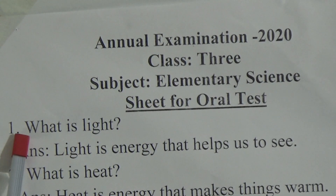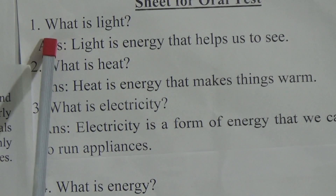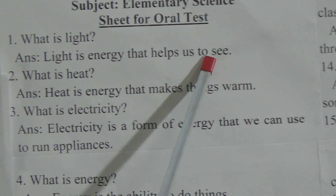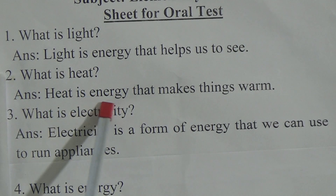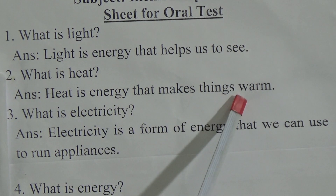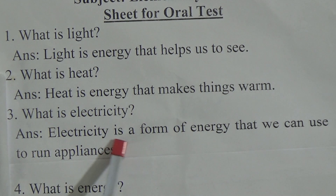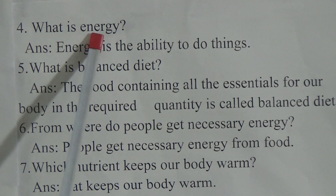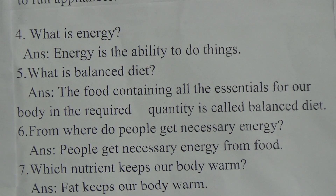Now we will discuss the oral sheet. Question 1: What is light? Answer: Light is energy that helps us to see. Question 2: What is heat? Answer: Heat is energy that makes things work. Question 3: What is electricity? Answer: Electricity is a form of energy that we can use to run appliances. Question 4: What is energy? Answer: Energy is the ability to do things.